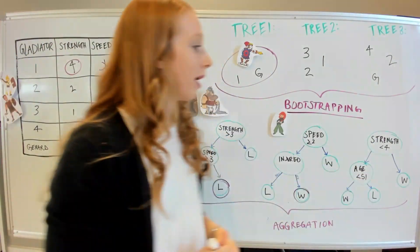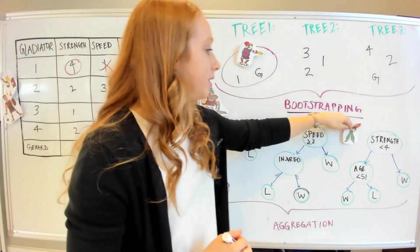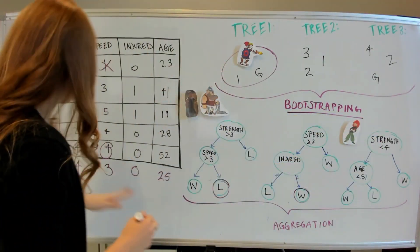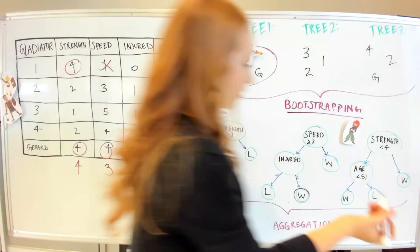Lastly, what about this last tree? Is the strength less than 4? No. I have a strength of 4. So I'll win again.